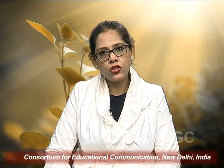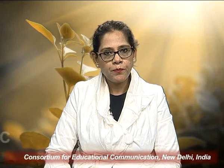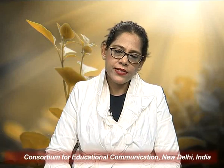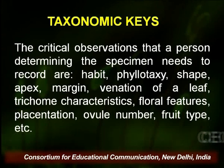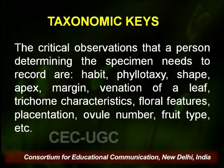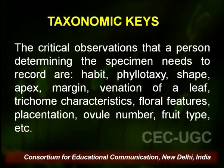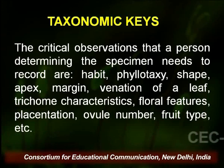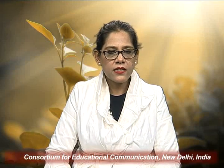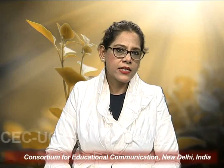For the identification of names of plants, both fresh material as well as dried herbarium materials can be used. The critical observations that a person determining the specimen needs to record are: its habit, phyllotaxy (meaning the arrangement of leaves on the plant/branches), the shape, the apex of leaf, margins, venation of a leaf, the trichome characteristics, the floral features, placentation, ovule number, the fruit type of that plant, etc. A good key is a synopsis presenting graphically the technical characteristics which in general or in aggregate differentiate taxa.